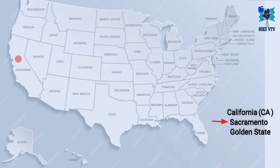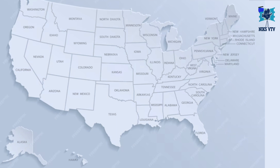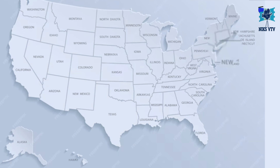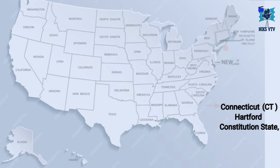Next is California, its abbreviation is CA, capital is Sacramento, and its time zone is PST — Pacific Standard Time Zone — and its nickname is Golden State. Next state is Colorado, abbreviation is CO, capital is Denver, and its time zone is MST, and its nickname is Centennial State.